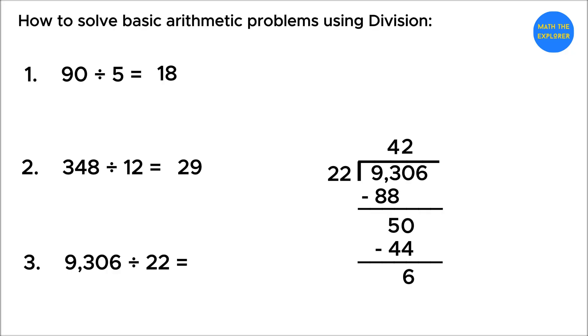Then bring down the last digit, 6, to make 66, and divide it by 22, which goes exactly three times. Finally, multiply 3 times 22 is equal to 66. Subtract to get 0. So the final answer to 9,306 divided by 22 is 423.